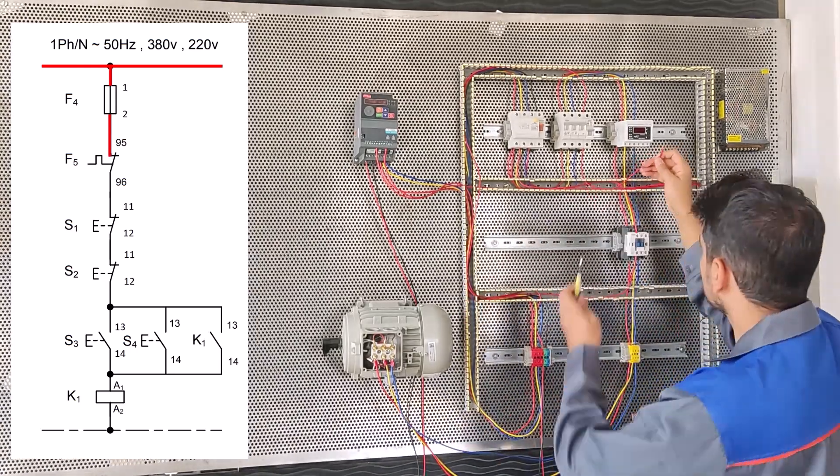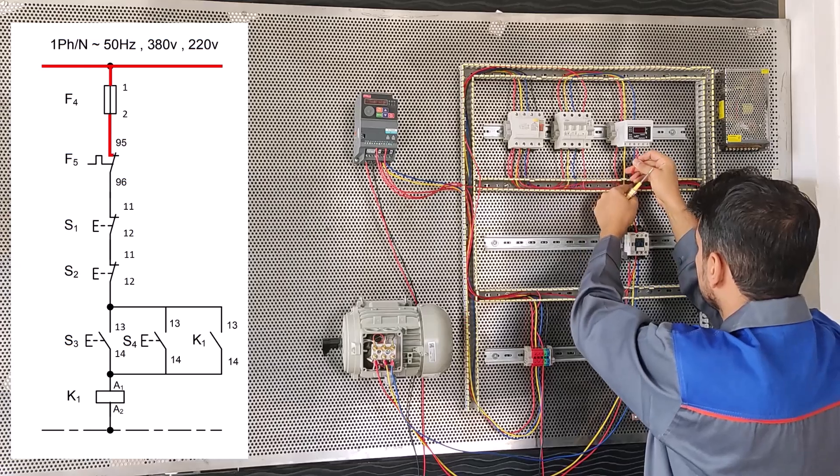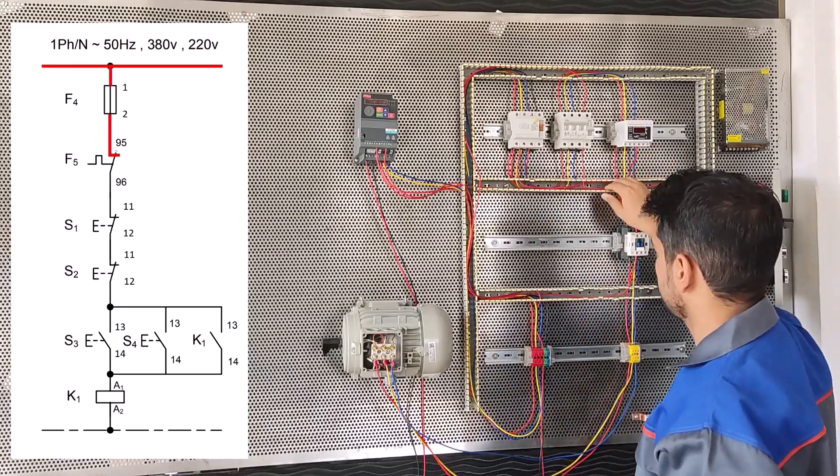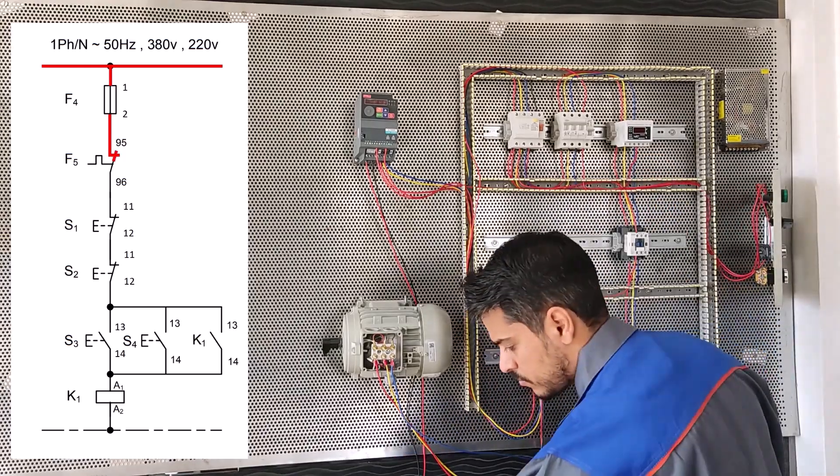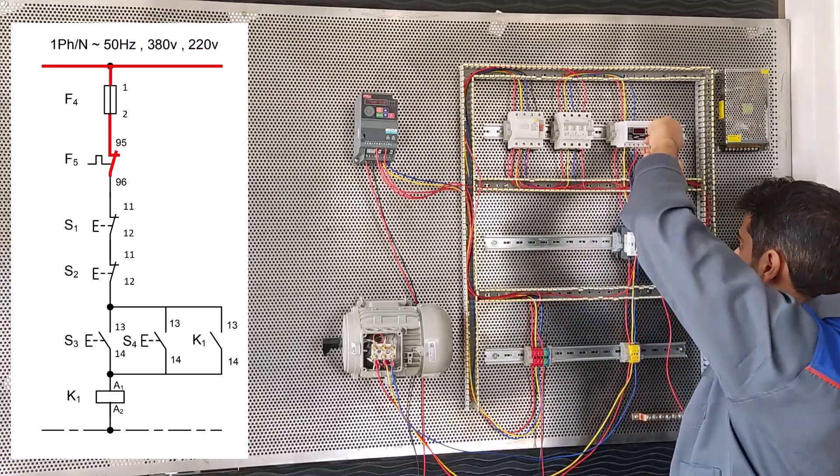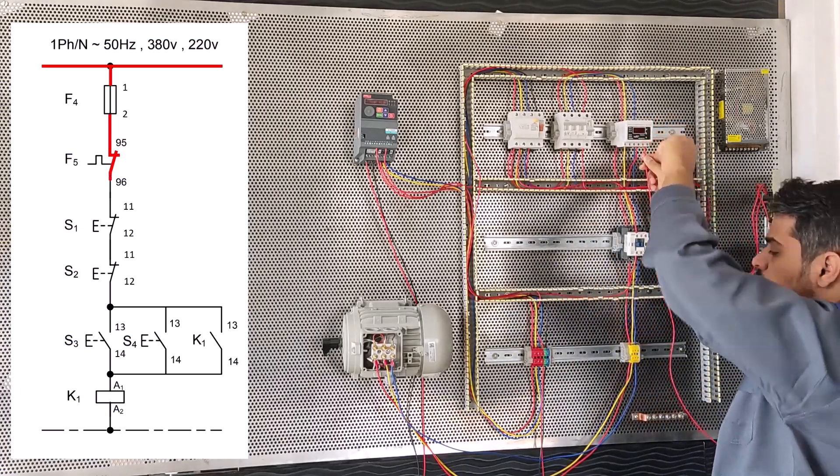It shows bimetal in the diagram, but we use control load instead of the bimetal. We connect from the normally open load control to 11 stop S1.